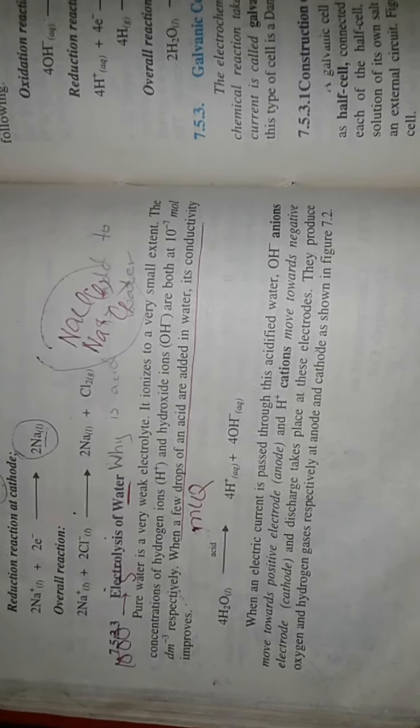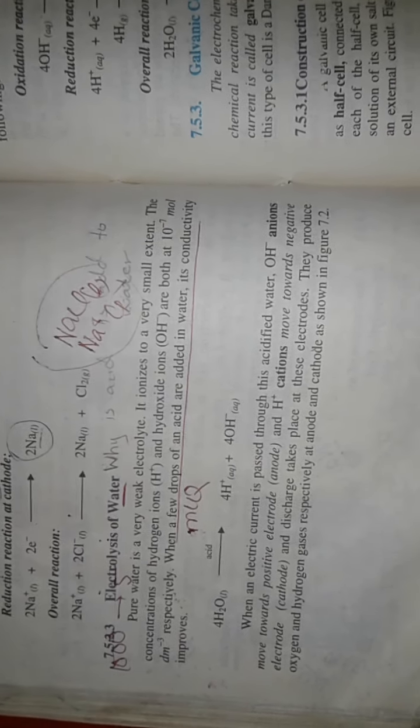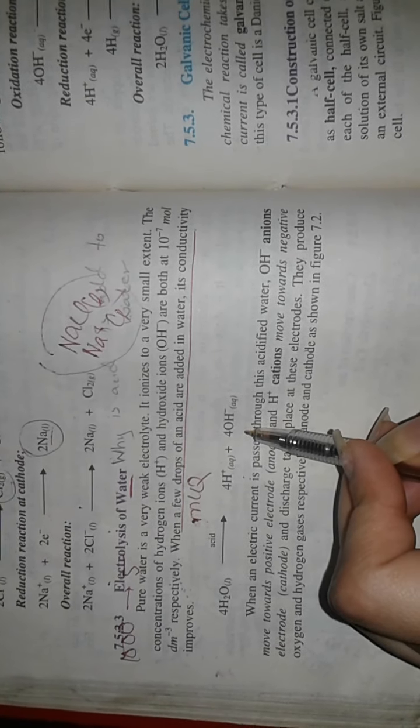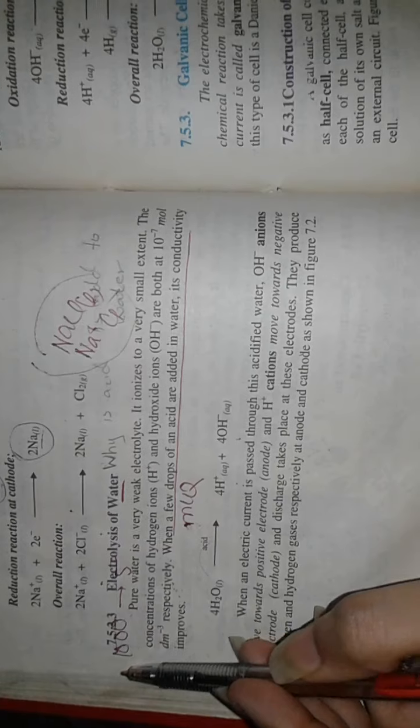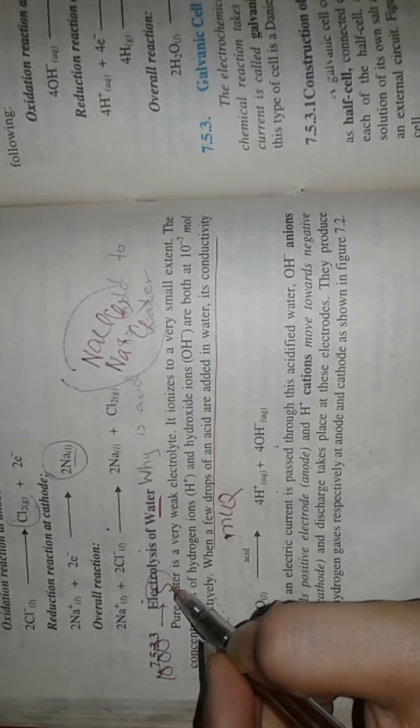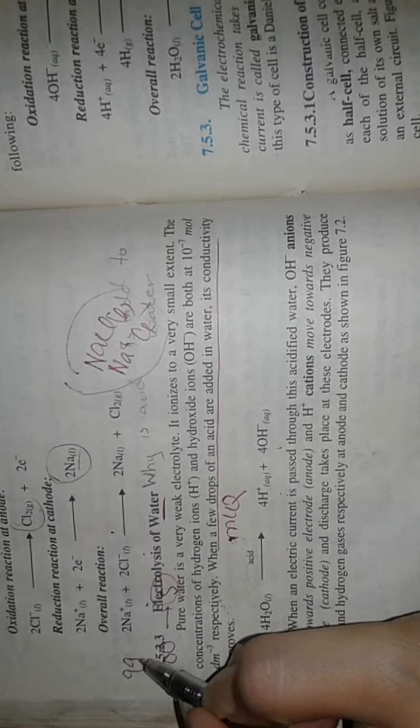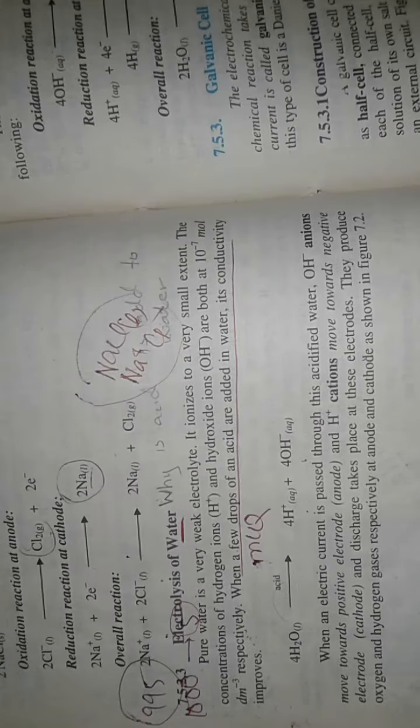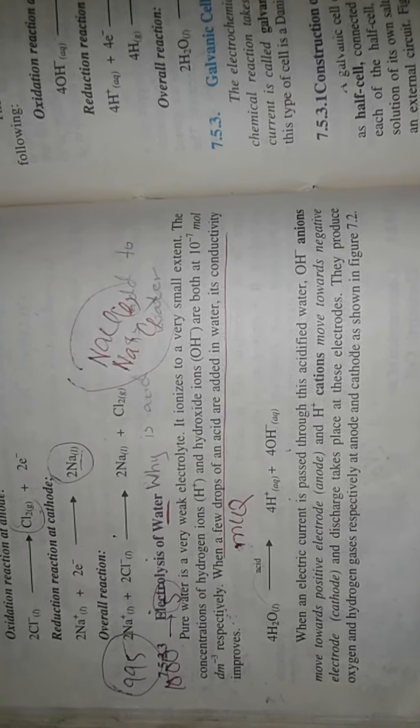Weak electrolyte does not completely ionize. If I have a thousand molecules of water, only five molecules will decompose or break down into H positive ions and negative ions. The remaining 995 molecules will not breakdown. That's why water is a weak electrolyte.